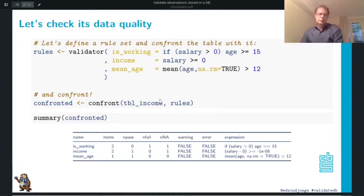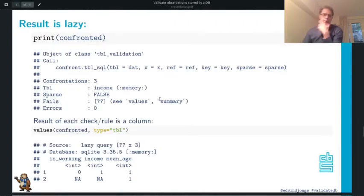This works just like Validate, but if you look at the object itself, you can see it's a SQL object. Each check or rule is a column in a database, or a lazy column. It's a lazy query, as you can see. Each column in this lazy query results in true, false, or NA for each rule.